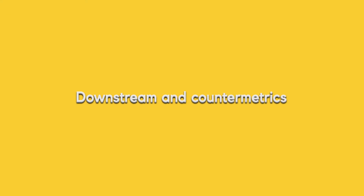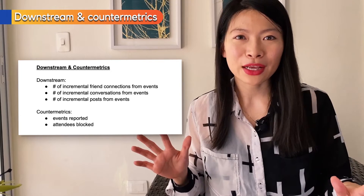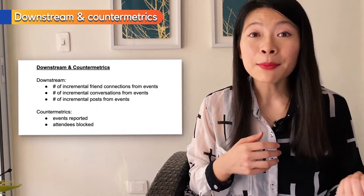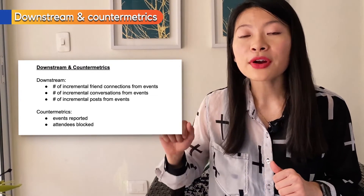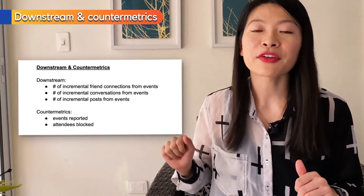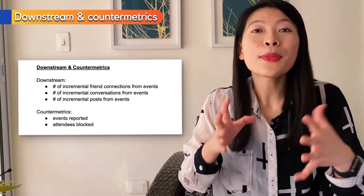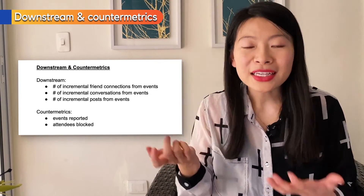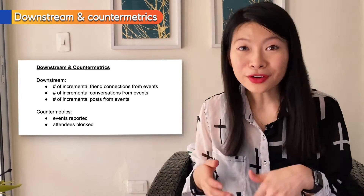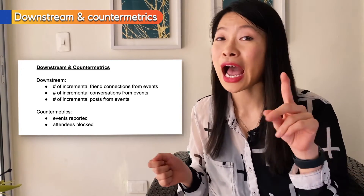Now, what are some downstream impacts of the Events product? Positive impacts could be the number of incremental friend connections happening because of events — we expect when people go to events and meet new people, they're going to make new friends. I'd also want to measure the number of incremental posts coming from events, since at events we're taking photos and naturally we'd want to post those to our timeline. And when we're planning to attend events, people are messaging each other before, during, or after, so we also want to measure the number of incremental conversations happening from events.